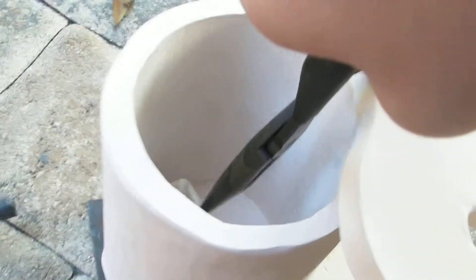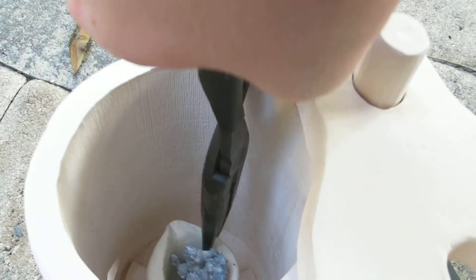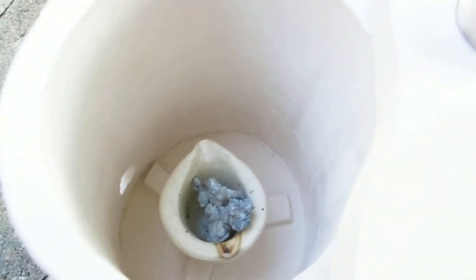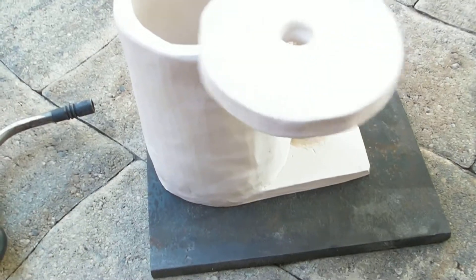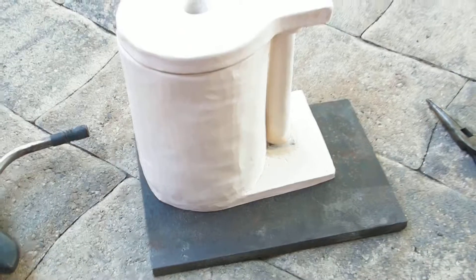I can just grab here. Obviously I'll test this before I do it, but grab there, set it out of the way, take my crucible like so, and carefully place that down in there. Not like that because I'm trying to film with one hand. Place that down in there like so, good to go, close her up.